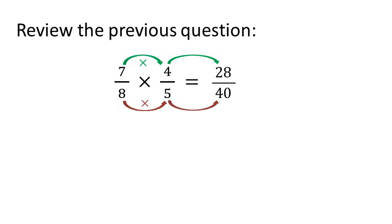Then we divided both the numerator and the denominator by 4 to get the simplest form of fraction, 7 over 10.